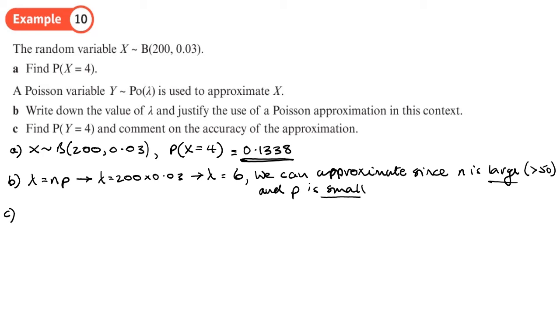Part C: Find the probability of y equals 4 and comment on the accuracy of this approximation. With our Poisson distribution with lambda as 6, we are going to work out the probability that x is 4. Press the option button, select 1, and then go to Poisson PD, number 2. Variable x is going to be 4, lambda is 6, and I get to 4 decimal places 0.1339 if I round it.